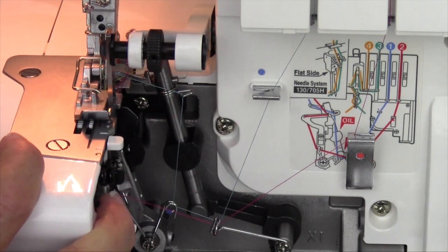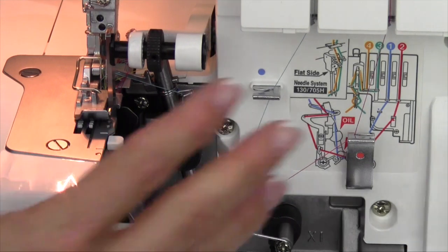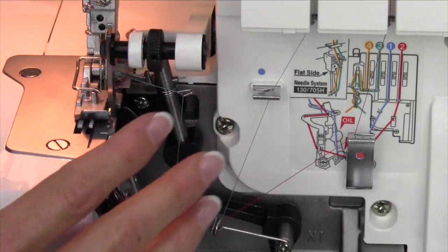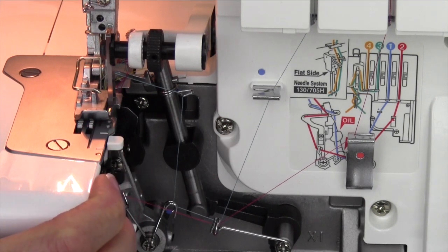Then once a year, take your serger in and have it professionally cleaned because there's still a lot of moving parts back behind here that only need to be oiled about once a year to really keep this running for years to come.